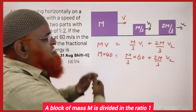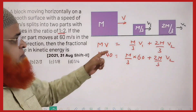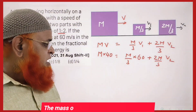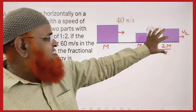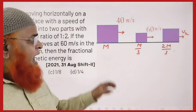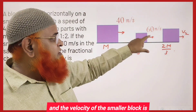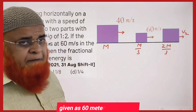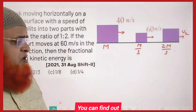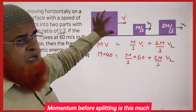A block of mass M is divided in the ratio 1:2 — meaning one-third of the total mass and two-thirds of the total mass. The velocity of the larger block is given as 40 m/s and the velocity of the smaller block is given as 60 m/s. The velocity of the larger division is not directly given; you can find it by using conservation of momentum.